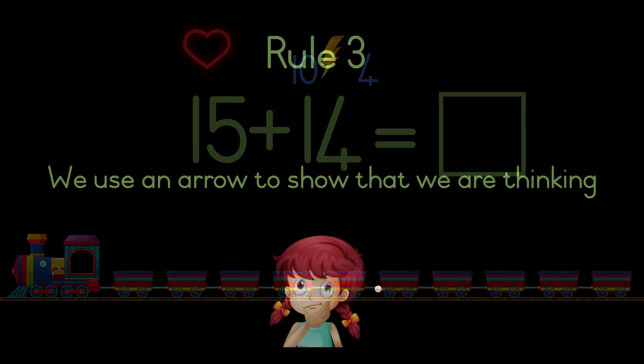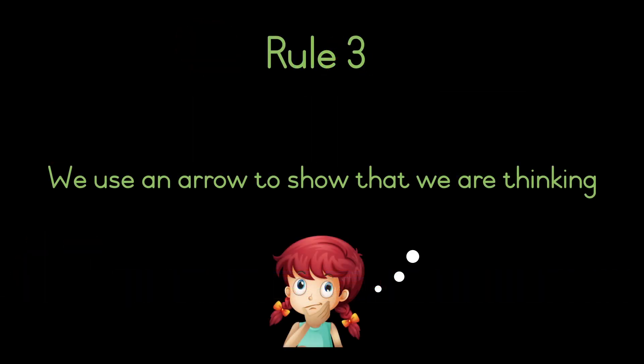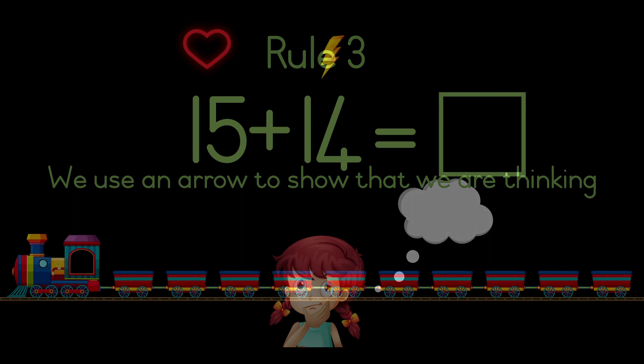Rule number three: we use an arrow to show that we are thinking. Here's the part that we have done already.